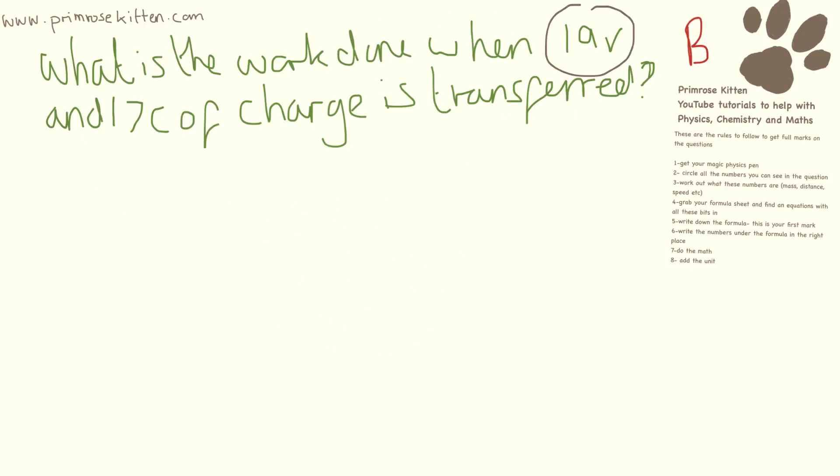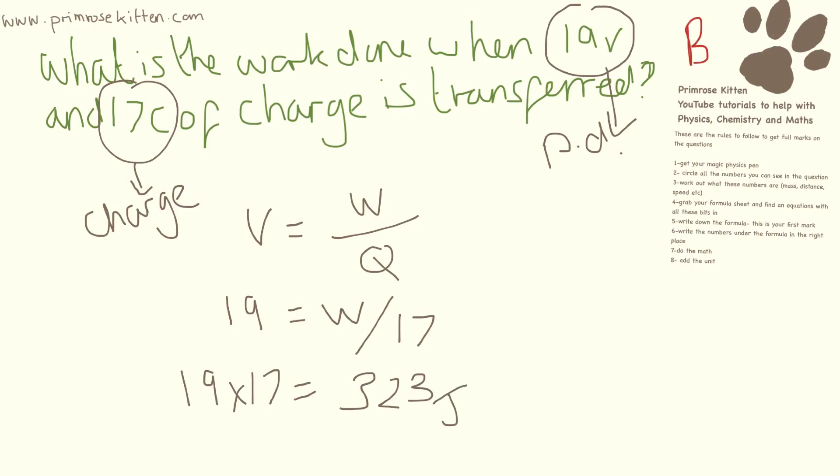So what is the work done when we have 19 volts and 17 coulombs? So this here is charge. This is potential difference and the equation we are going to be using is potential difference equals work done over charge. Now there are two ways you can do this. You can either rearrange the equation first or you can put the numbers in first. Now because this is a divide we need to take the 17 up to the other side by timesing it. So we are going to get 19 times 17 which is going to equal 323 joules of work.